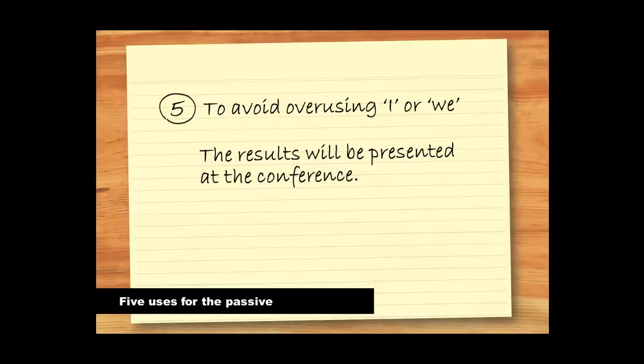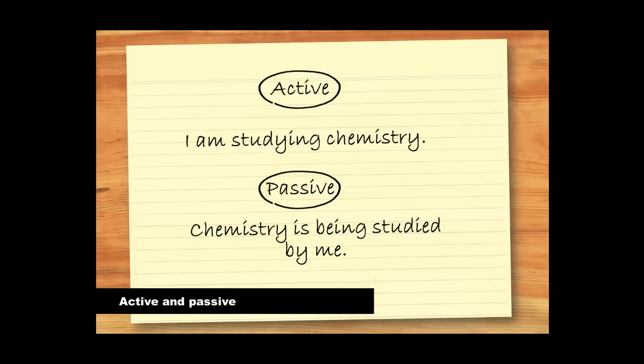Sometimes we use the passive to avoid overusing I or we in academic writing. But too many passive sentences sound awkward and can make your writing feel flat. The first sentence here, which is active, sounds more natural and succinct.